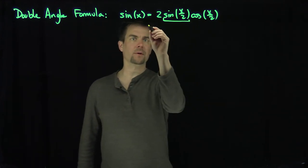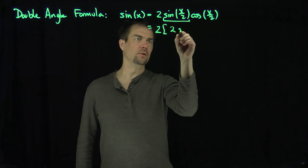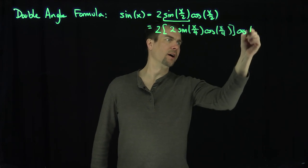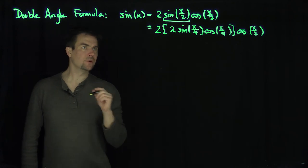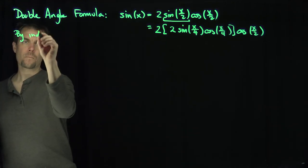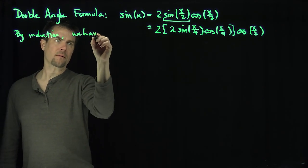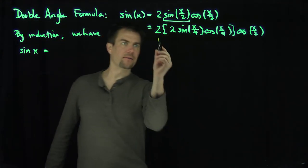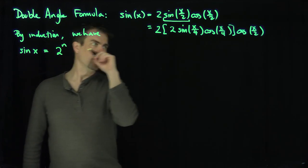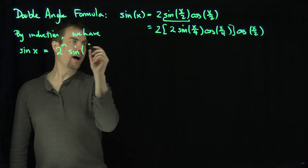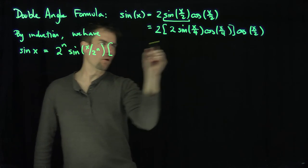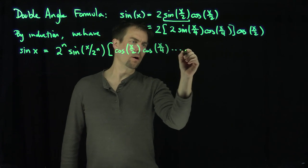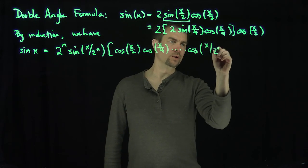I'm going to focus on the sine term and apply the double angle formula again, giving 2 times sine of x over 4 times cosine of x over 4, times cosine of x over 2. By induction, we have the relationship that sine of x equals 2 to the power of n times sine of x over 2 to the power of n, multiplied by cosine of x over 2, cosine of x over 4, all the way down to cosine of x over 2 to the power of n.